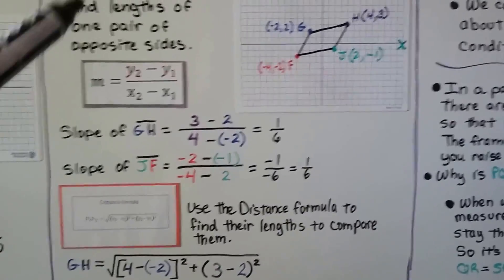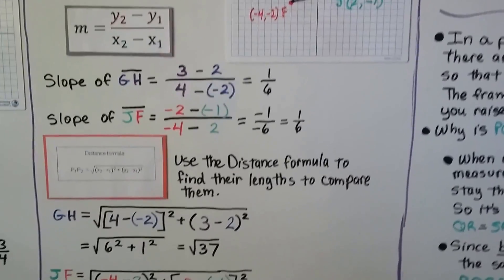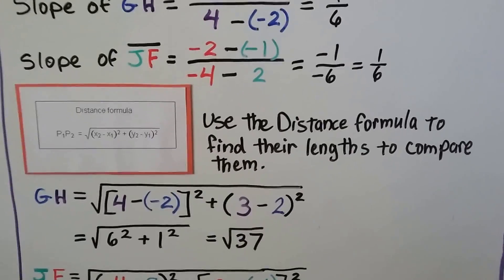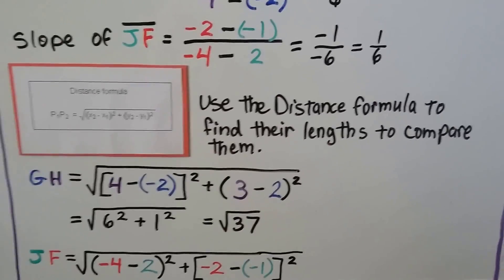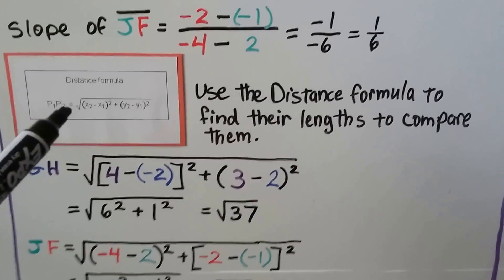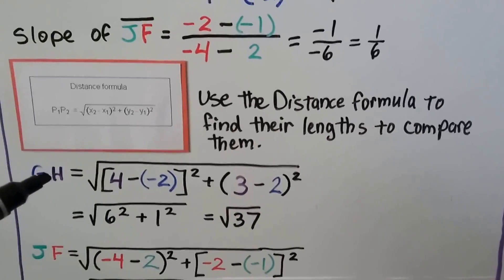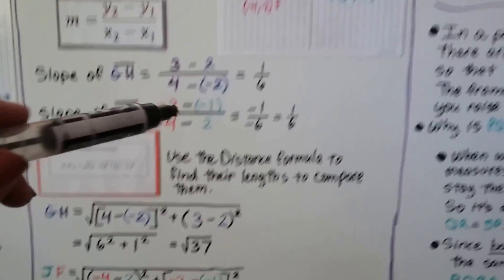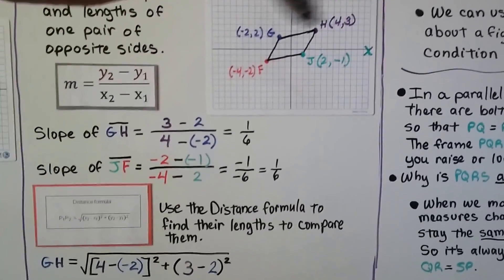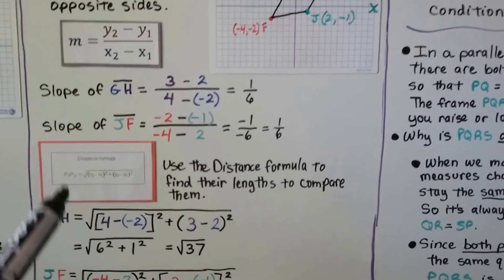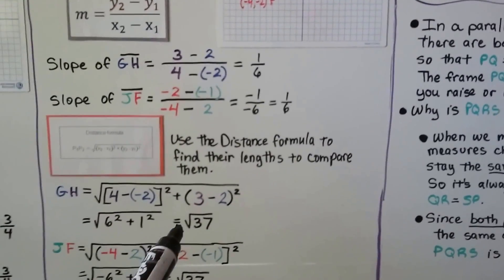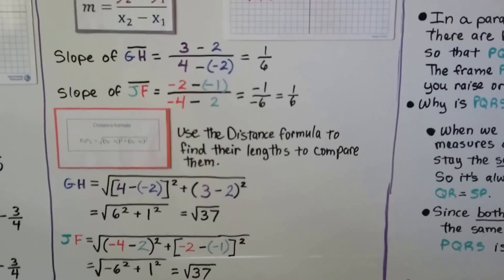Now what we're going to do, because we need to find the lengths of the opposite sides, is we're going to use the distance formula to find their lengths to compare them. So remember, it's the distance, and then we put in the ordered pairs here. So for GH, that is going to be this one here. We put it into the distance formula, and it is equal to the square root of 37.